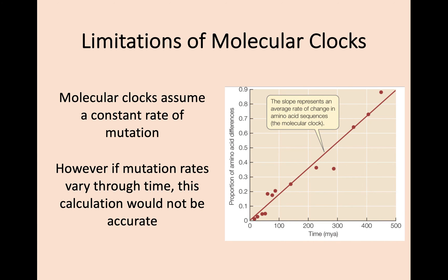The problem with this approach is that molecular clocks assume a constant rate of mutation. If these mutation rates actually vary over time, then you don't have an accurate calculation, and this can greatly affect your estimated time of divergence — possibly by billions or millions of years.